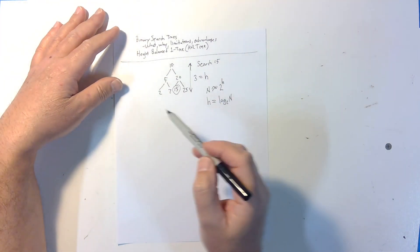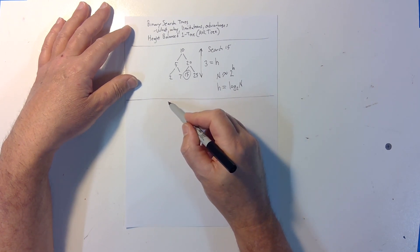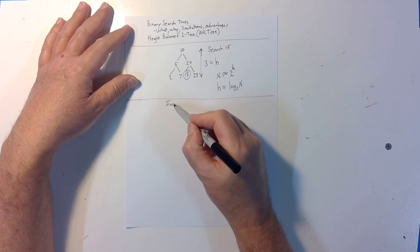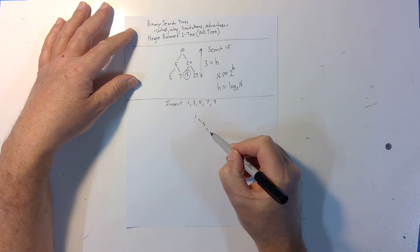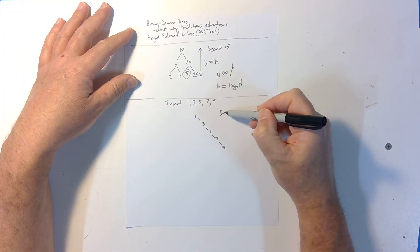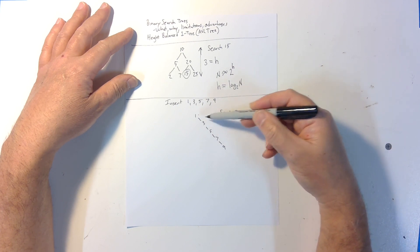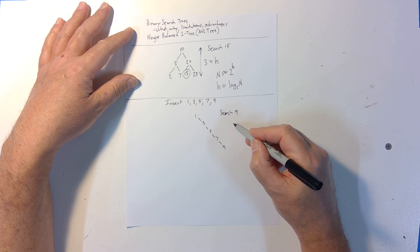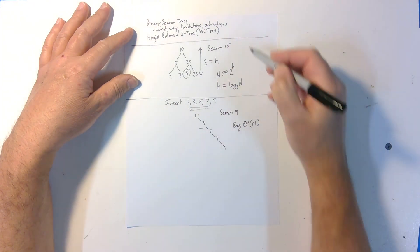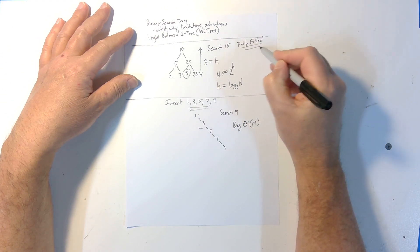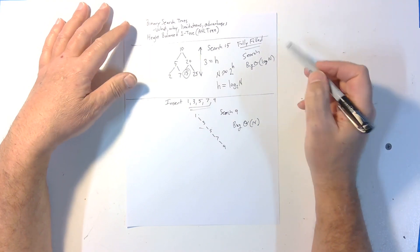That's great, but the problem is that we often have no control over the order in which the keys — the data we're putting into the tree — appear. For example, if this sequence showed up, the resulting tree would be a straight line. To do a search for nine, you'd start at the root and go bigger, bigger, bigger, bigger — you'd look at every node. So the search function for this particular data set is O(n), whereas if the tree is fully filled, search is O(log₂ n).